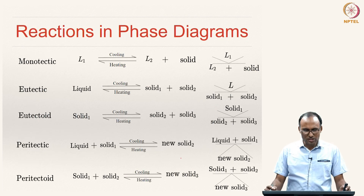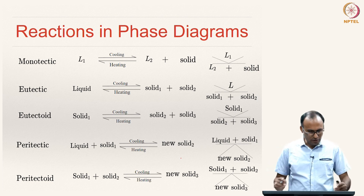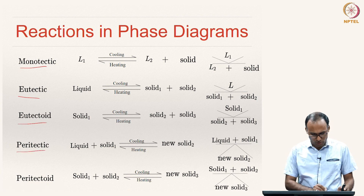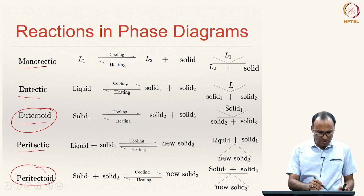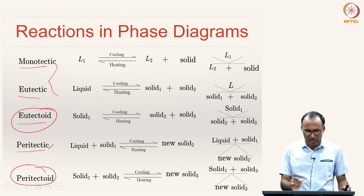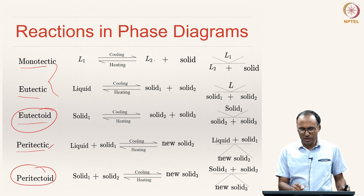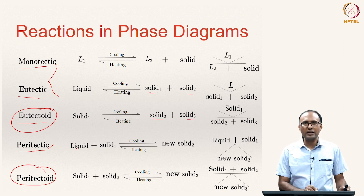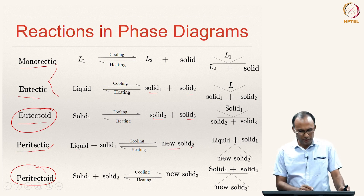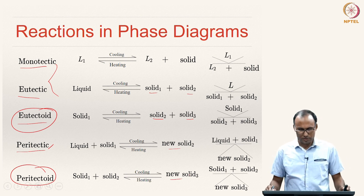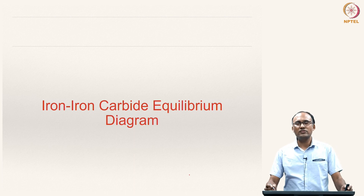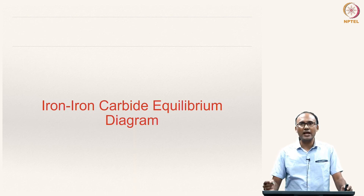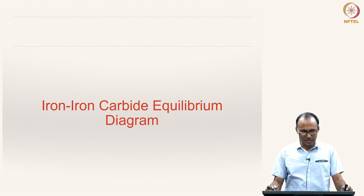To summarize, the five reactions discussed in this course are: monotectic reaction, eutectic reaction, eutectoid reaction, peritectic reaction, and peritectoid reaction. The eutectoid and peritectoid are solid state reactions; the other three involve a liquid phase. Monotectic: liquid cooled gives a liquid and a solid. Eutectic: liquid cooled gives two solids. Eutectoid: solid cooled gives two solids. Peritectic: liquid plus solid gives a new solid. Peritectoid: two solids cooled give a third solid. Next, we will discuss the iron-iron carbide equilibrium phase diagram.